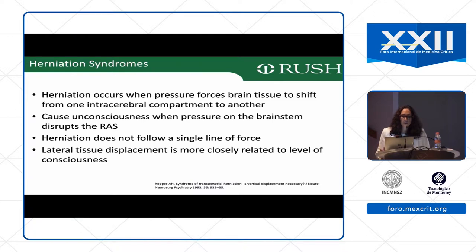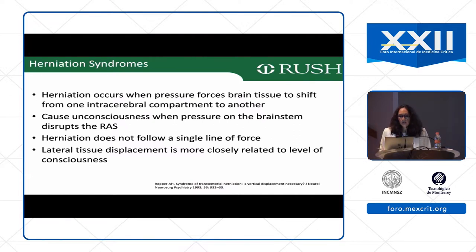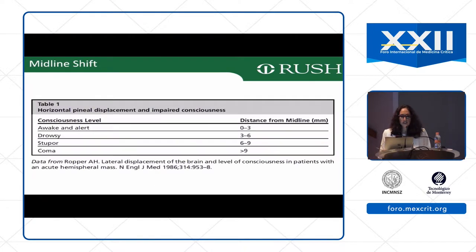Stepping on to herniation syndromes. Herniation is when pressure forces brain tissue to shift out of one compartment into another. It is the involvement of the reticular activating system that causes these patients to be comatose. Herniation doesn't follow a single line of force — it's not just a transverse shift, but a transverse and downward shift. It's the lateral tissue displacement that's more closely related to the level of consciousness.